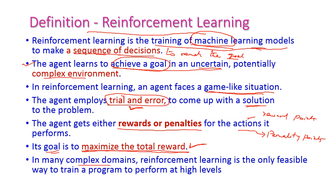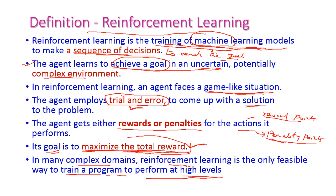In many complex domains, reinforcement learning is the only feasible way to train a program to perform at high levels. The machine will learn to reach the goal through a sequence of decisions. While doing those decisions it will perform actions — if the action is correct it will get reward points, otherwise it will get penalty points. Our goal is to maximize the total reward points. This is called reinforcement learning.